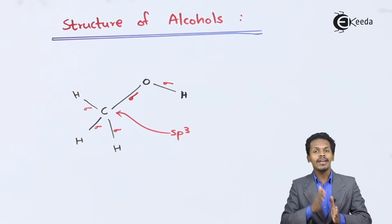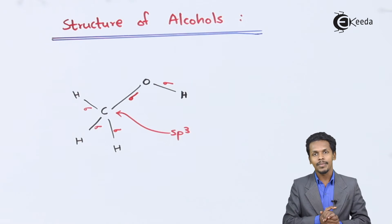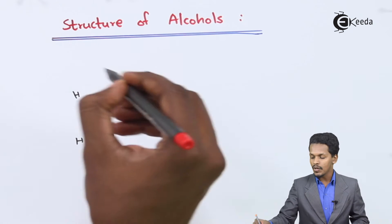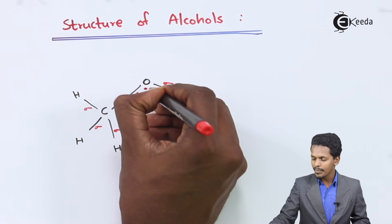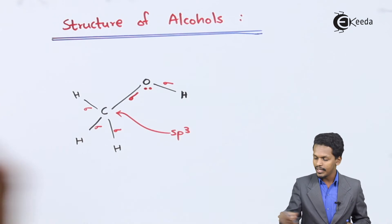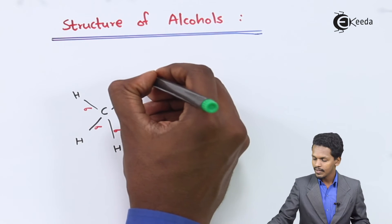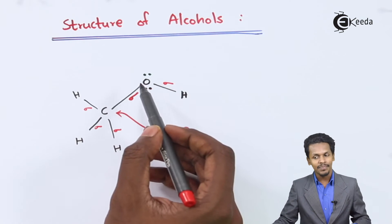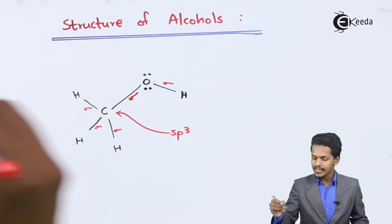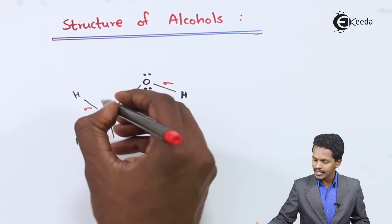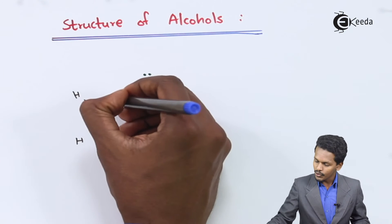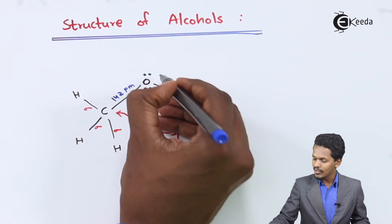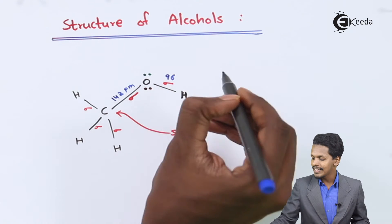Now let us come back to the main geometry. Before understanding the geometry, let me discuss a few points about the oxygen atom. Oxygen consists of two lone pairs of electrons. Talking about the distance between the carbon and this oxygen atom — the main functional group of the alcohol — that distance has been found to be 142 pm.